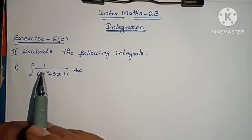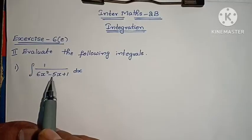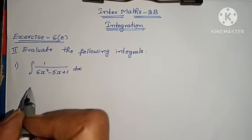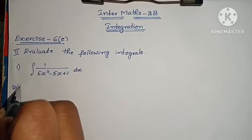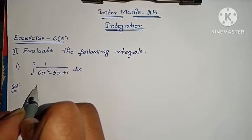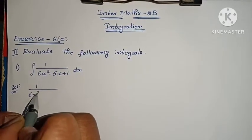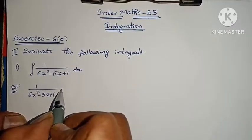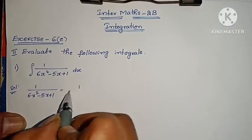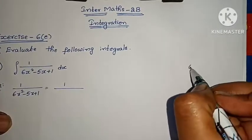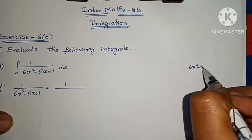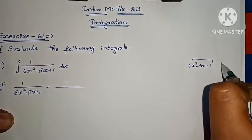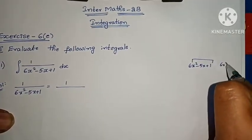The first one: integral of 1 by 6x squared minus 5x plus 1, dx. Let's consider the solution for this. 1 by 6x squared minus 5x plus 1 equals to 1 by — let's factor 6x squared minus 5x plus 1. First term times last term multiply: 6x squared.